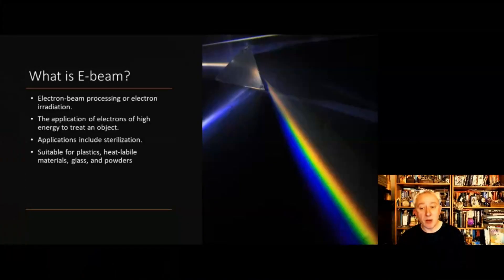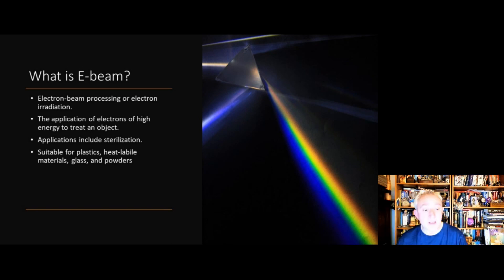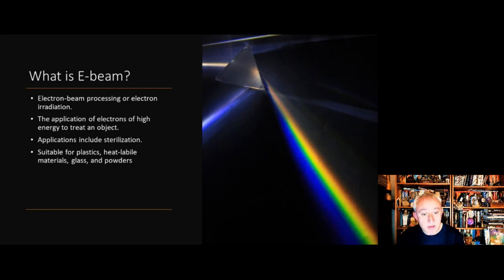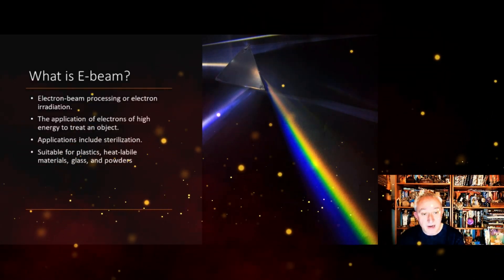E-beam has been around for a very long time, but it's becoming increasingly used given the problems being experienced with gamma radiation. The problem with gamma radiation is a global shortage, partly due to regulations in terms of getting hold of the isotope necessary for gamma. So our focus is increasingly on technologies like x-rays and e-beam.